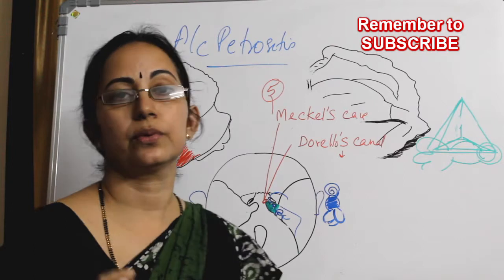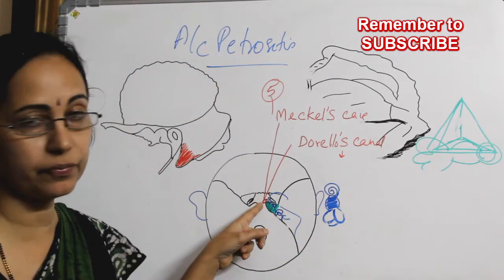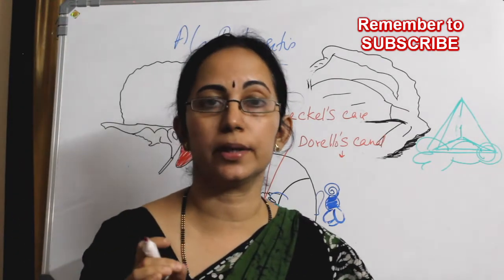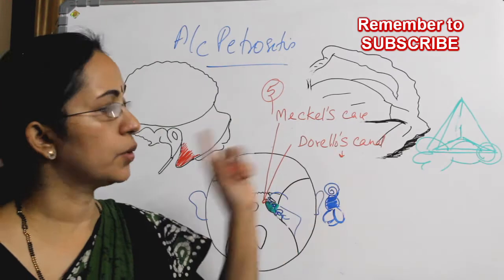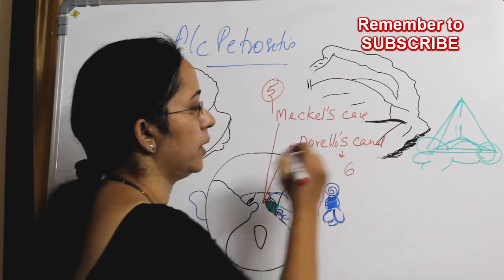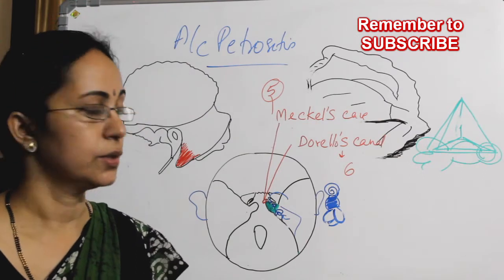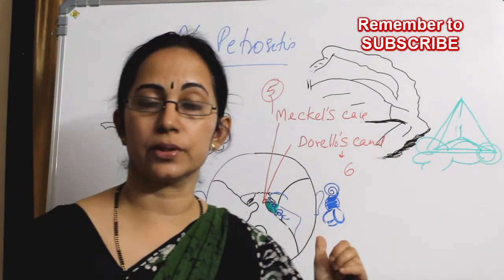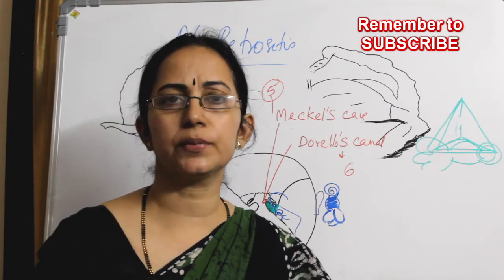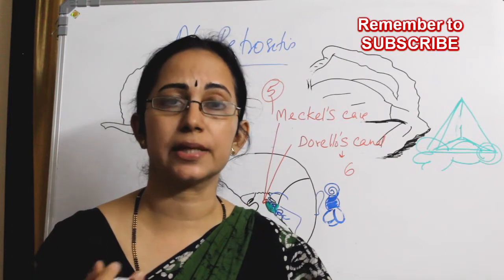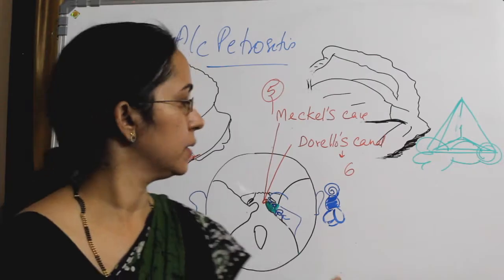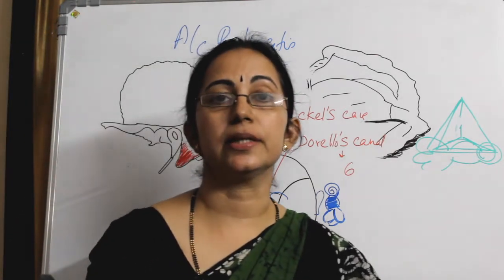And beneath the petroclinoid ligament there is Dorello's canal. At the tip of the petrous pyramid, going to the clinoid process, runs the petroclinoid ligament, and beneath it runs Dorello's canal, which contains the sixth nerve — the abducent nerve. When there is edema of Dorello's canal, abducent nerve palsy occurs, and since the abducent nerve supplies the lateral rectus, there will be lateral rectus palsy causing a squint.